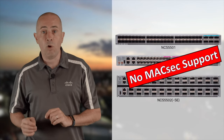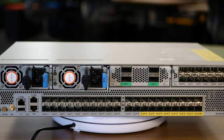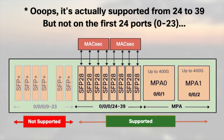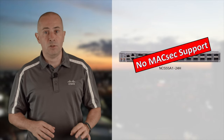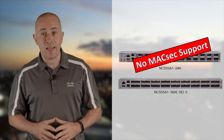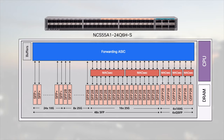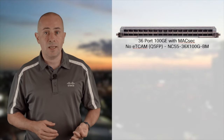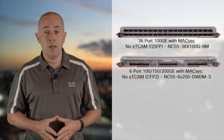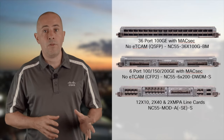Looking at hardware-dependent features: MACsec is not supported on the 5501 or 5502, but is on the 55A2-Mode on fixed ports 23–39 and all MPA ports. Not on the 55A1-24H, but on all ports of the 55A1-36H-SC or non-SC. On the 55A1-24Q-6H, MACsec is on the last 16 SFP ports. On the 48Q-6H, MACsec is only on QSFP ports. On line cards, MACsec is only on the 36x100G MACsec card, the 6-port 200G IP-over-DWDM, and the modular line cards (both fixed and MPA ports). Not supported on the 400G DD cards.